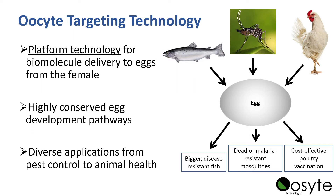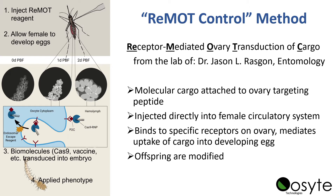For any of these organisms — a mosquito, a fish, a chicken, pretty much anything that lays an egg — you can introduce modified biomolecules into the circulatory system where they will target and enter the developing eggs. We call this method REMOTE CONTROL, which stands for Receptor-Mediated Ovary Transduction of Cargo, a method my lab developed to do genetic engineering in arthropods.